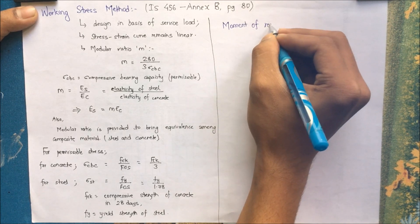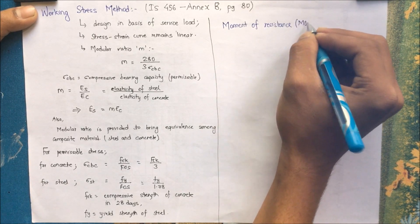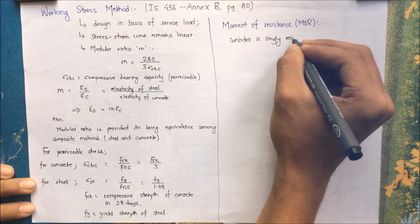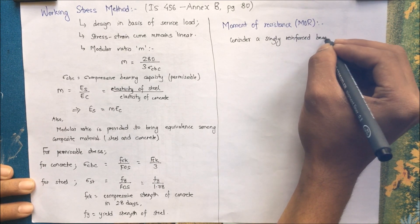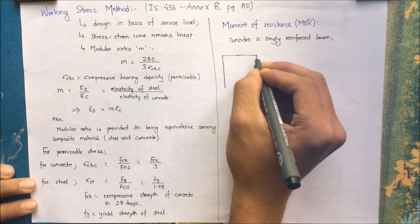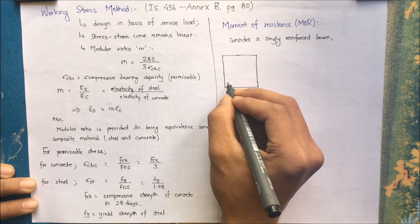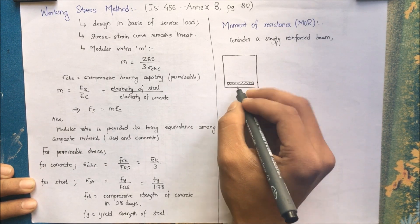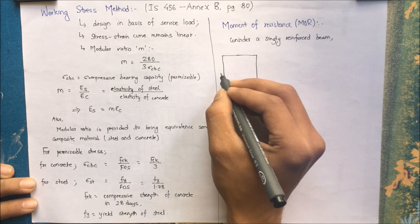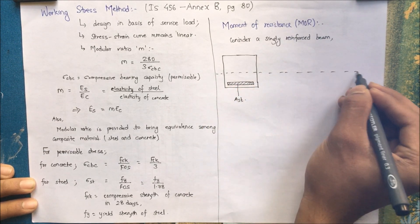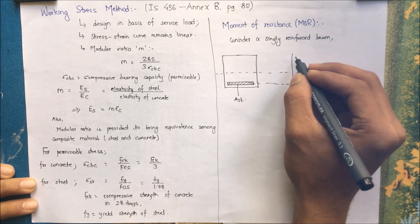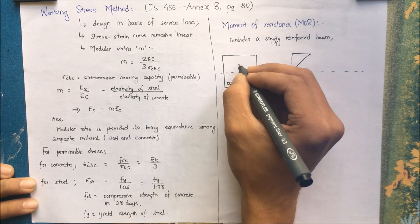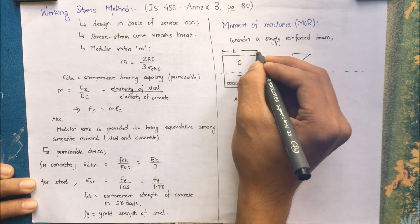Moment of resistance is the capacity of a section to resist the applied load. Consider a singly reinforced section, where reinforcement is provided only in the tension region of the beam. Let me draw a section of a beam — here is the reinforcement, represented as a strip. This is AST, that is the area of steel provided. This is the neutral axis, and we consider the effective depth D.